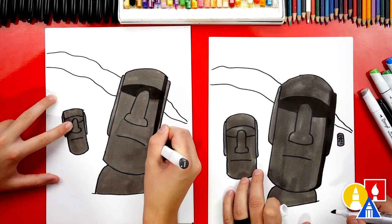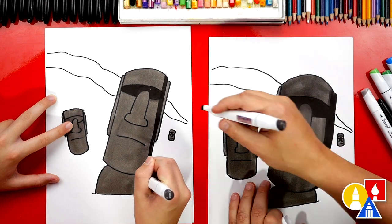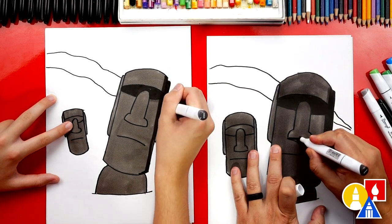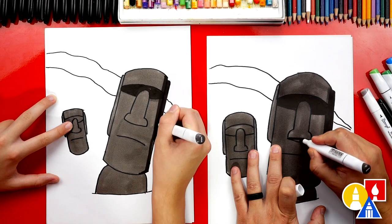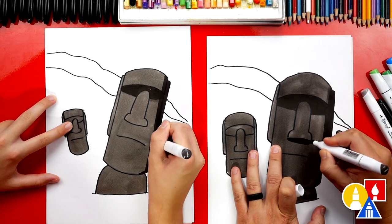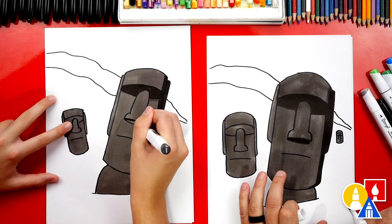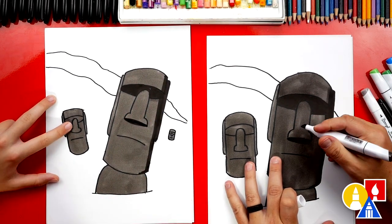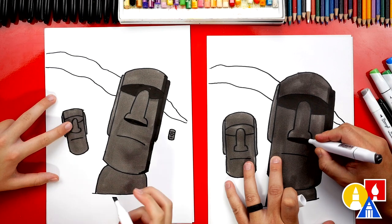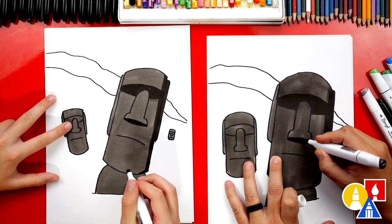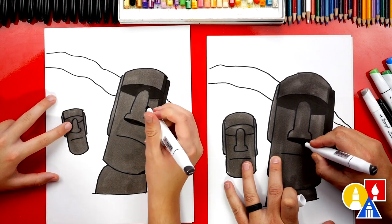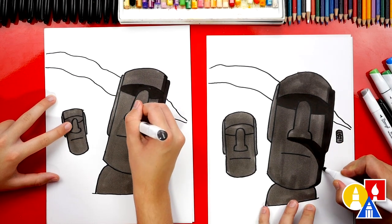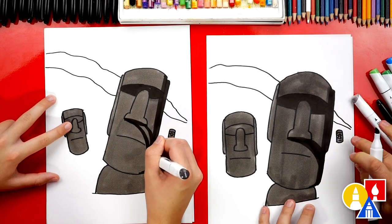Look at that. That already looks 3D. Now we're going to color in the bottom of the nose. So I'm going to curve up and fill in the shadow underneath the nose. Then we're going to make this look like a really long shadow coming down the side of the face. So we're going to curve it down. And because we're curving it down, it makes the statue look more 3D.